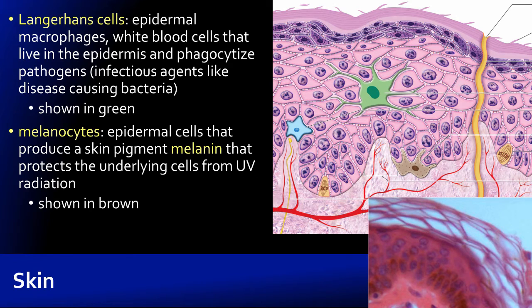Within the epidermis we want to talk about two types of cells in particular. The first is the Langerhans cell, which is an example of what we call a macrophage — these are white blood cells, some of which roam the body and some of which are residents in tissues. This cell basically helps prevent things from getting through our skin to infect us, because in our epidermis there are no blood vessels, but if pathogens get through into the underlying dermis, they can invade blood vessels and cause a much bigger problem.